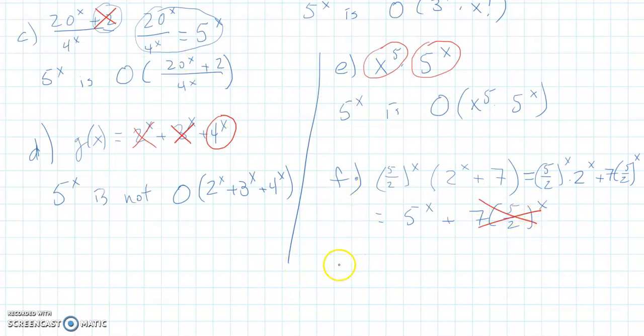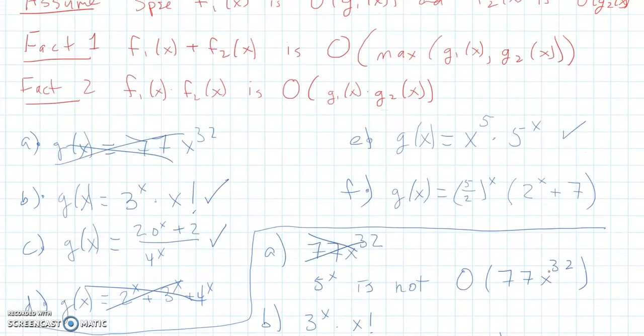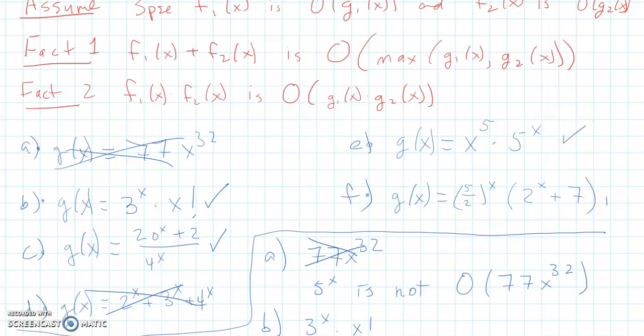And 5 to the x does grow as fast as 5 to the x. So that means that 5 to the x is big O of that original one we have, 5 halves to the x times 2 to the x plus 7. So this one also checks out.